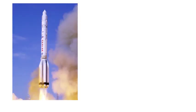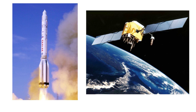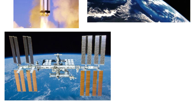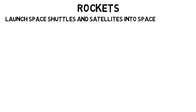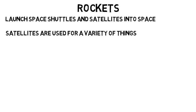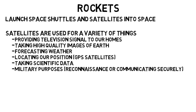Astronautics would include designing rockets and satellites, or specific things like working on the International Space Station, which is basically one big science lab in space that astronauts stay and perform experiments in, or maybe the Mars rover that is gathering data from Mars without the need for a human to be there. Rockets are made in order to launch space shuttles and satellites into space, and those satellites are used for a variety of things, including providing television signal to our homes and taking high-quality images of Earth.